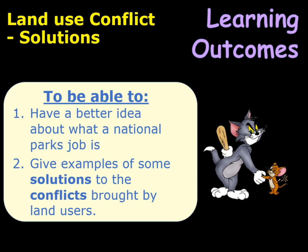That should hopefully give you a better idea about what a national park's job is and does, and give you some examples of solutions to conflicts brought about by land users. That's it for this lesson. If you haven't seen parts one or two where we talk about the different land uses and the conflicts, go and check them out. That's it for this National Geography series in glaciated upland land uses. If you've got any questions, leave them in the comments below. Until the next topic — bye!